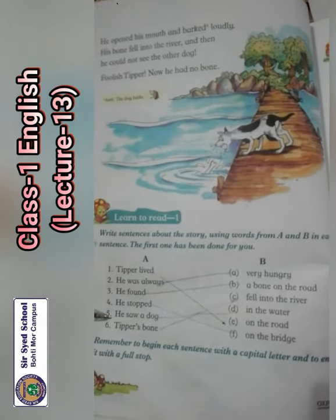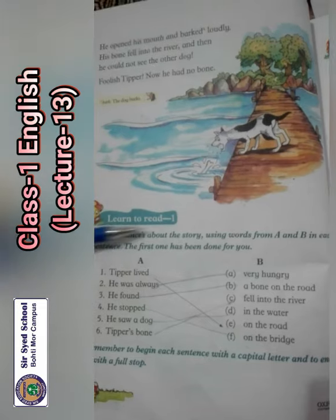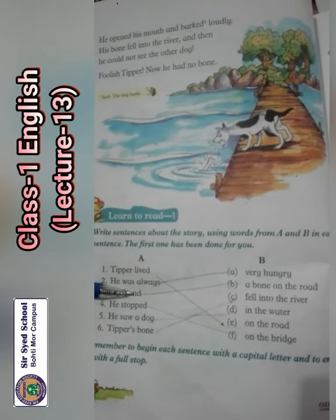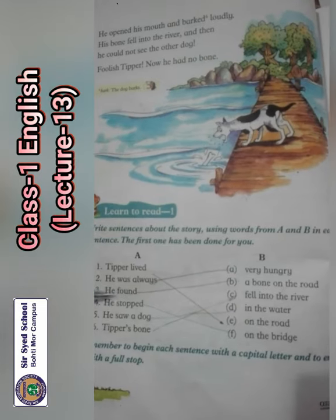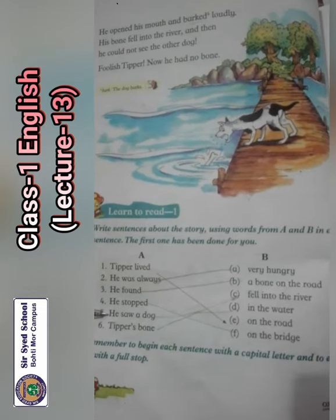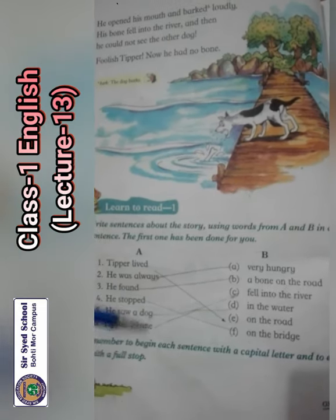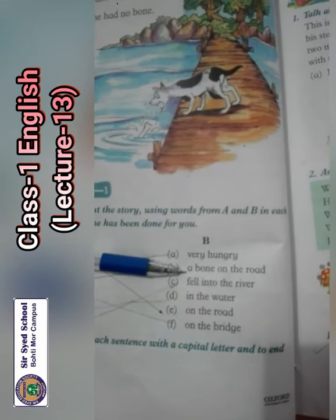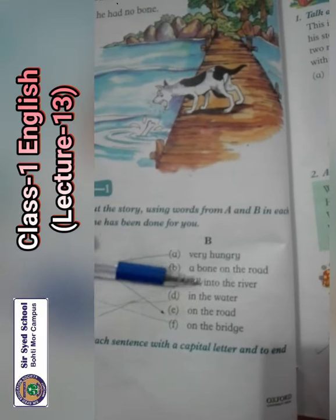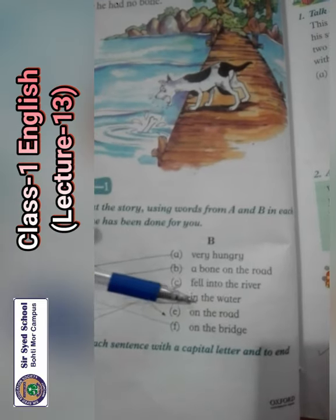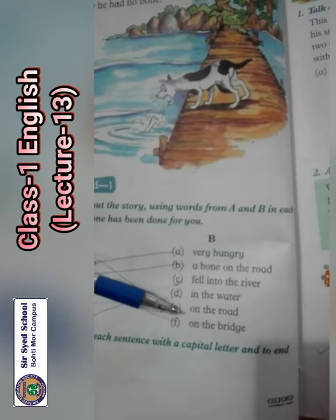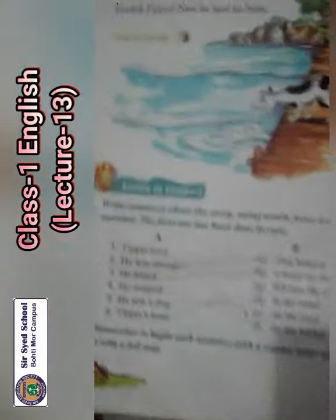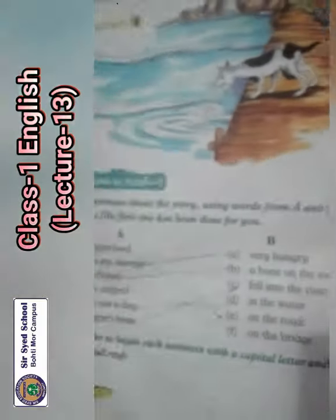Here we have sentences in column A — match them with column B. Column A: Tipper lived, he was always, he found, he stopped, he saw a dog, Tipper's bone. Column B: very hungry, a bone on the road, fell into the river, in the water, on the road, on the bridge. Now we have to match A and B.